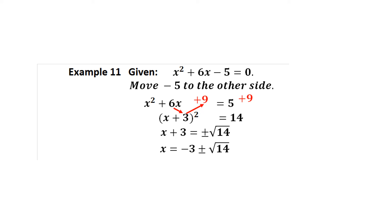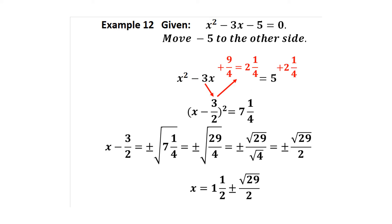Example: x² + 6x − 5 = 0 does not factor. Move −5 to the right: x² + 6x = 5. Half of 6 is 3 and 3² = 9. Add 9 to both sides: x² + 6x + 9 = 14, so (x+3)² = 14. Thus x + 3 = ±√14, giving x = −3 ± √14. The two answers are −3 + √14 and −3 − √14.